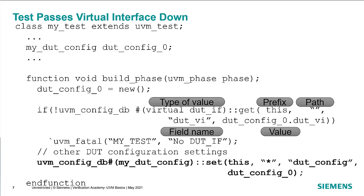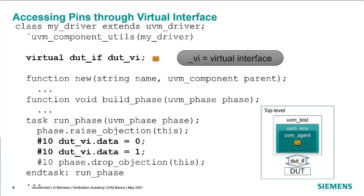We do other configuration settings here, and then from the test we call uvm_config_db::set. In this case, the parameterization is of a my_config object, and we're going to pass in config0. We use the star, so any element that's looking for something called config will see the value of config0, which includes the .vi pointer and any other configuration settings that we may have done. Now, inside of the agent, there's a component we'll call a driver, and this is the thing that actually connects specifically to the DUT. It has in it a virtual_if that we'll call _vi. This is a component in UVM — it has the same constructor and build phase as before. In the run phase, we raise an objection, and then we can access the pins through the virtual interface. So vi.data allows us to set the values for that. And when we're done, we drop the objection to end the test.